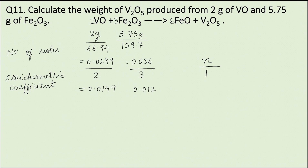As we can see, the value of number of moles divided by stoichiometric coefficient is the least for Fe2O3. Therefore, Fe2O3 is the limiting reagent.